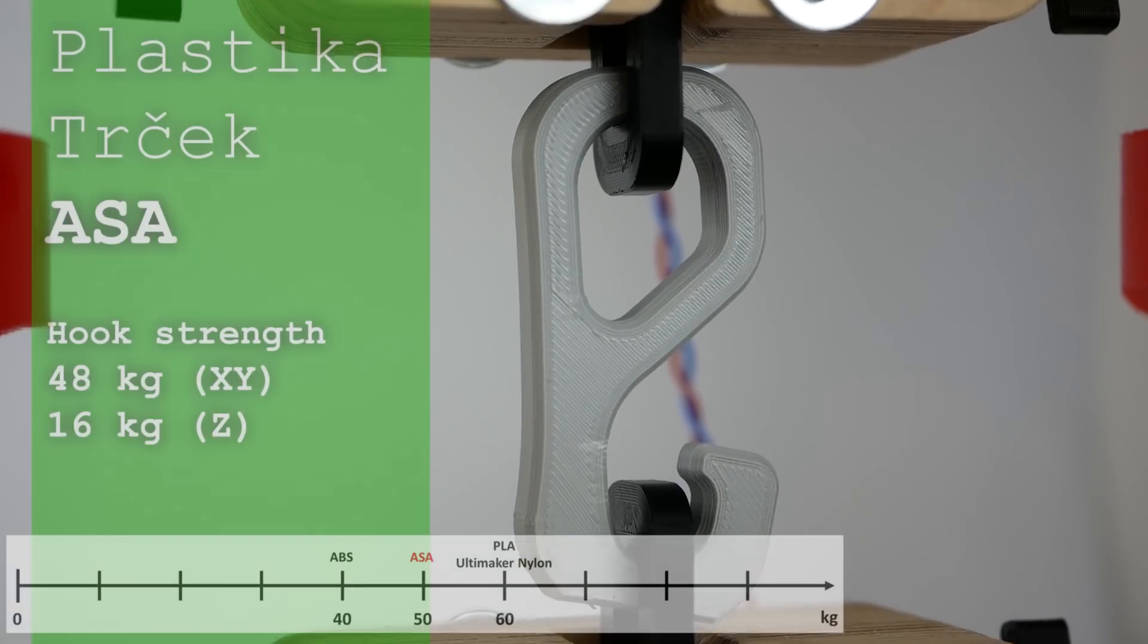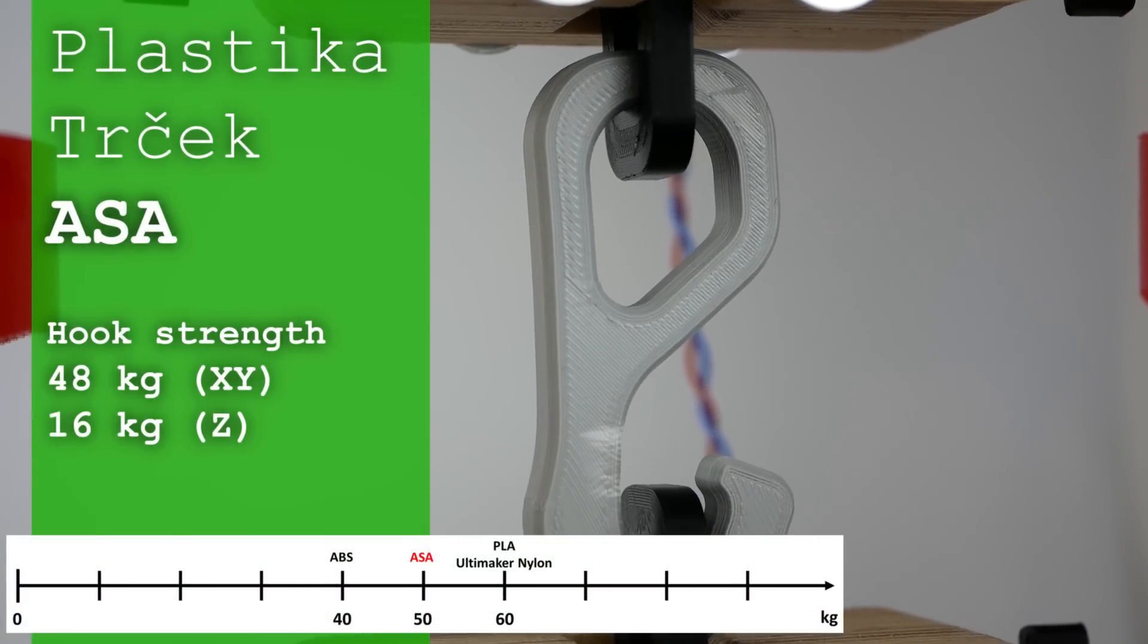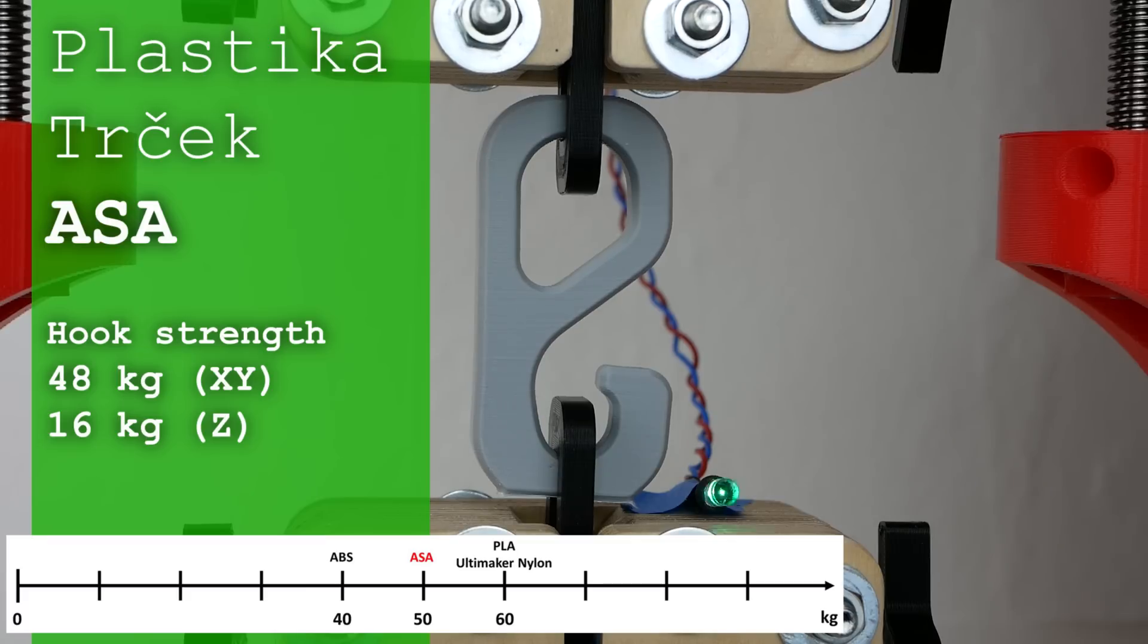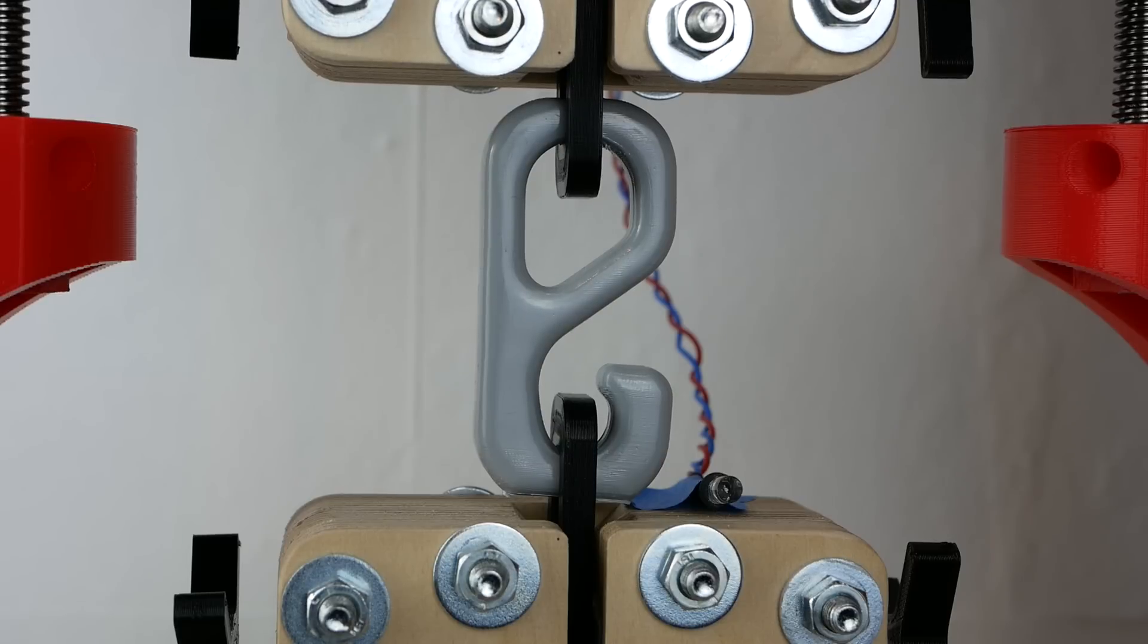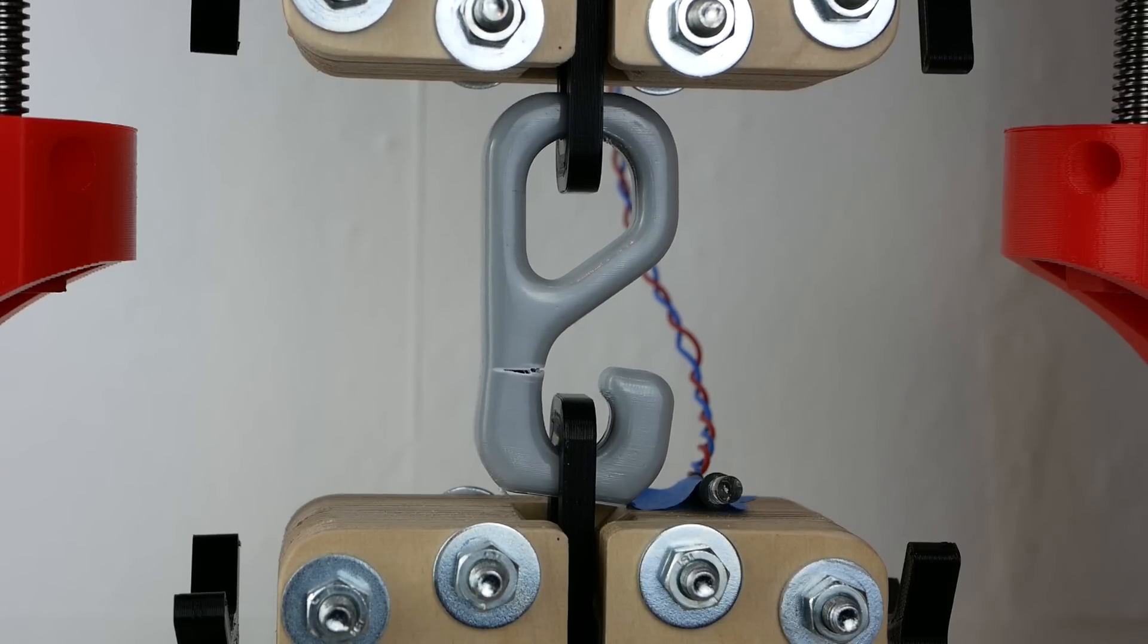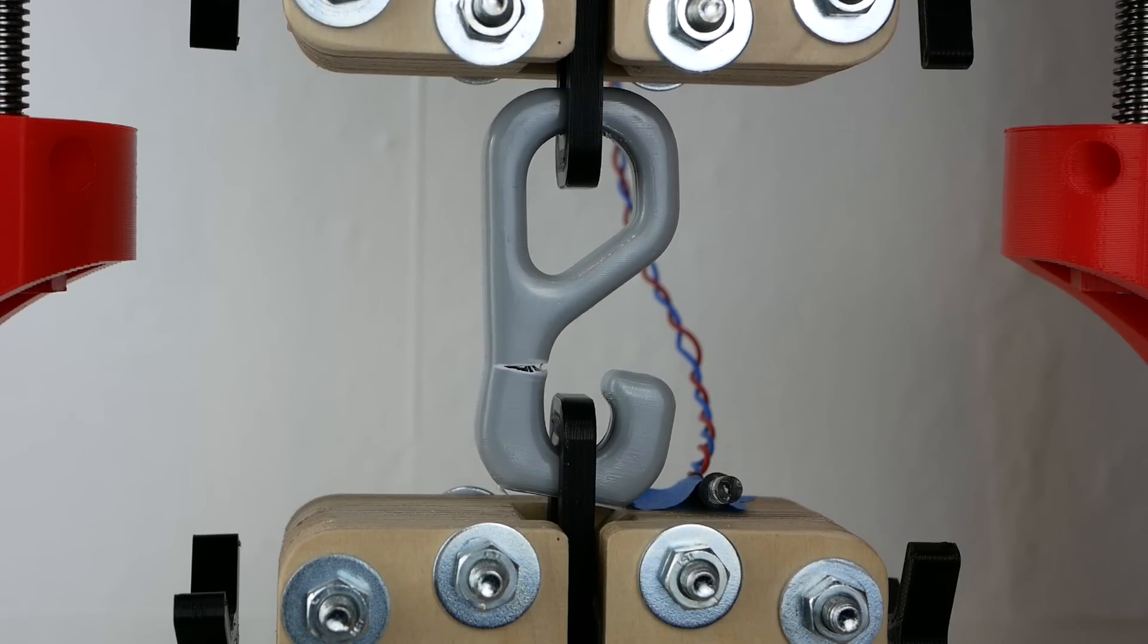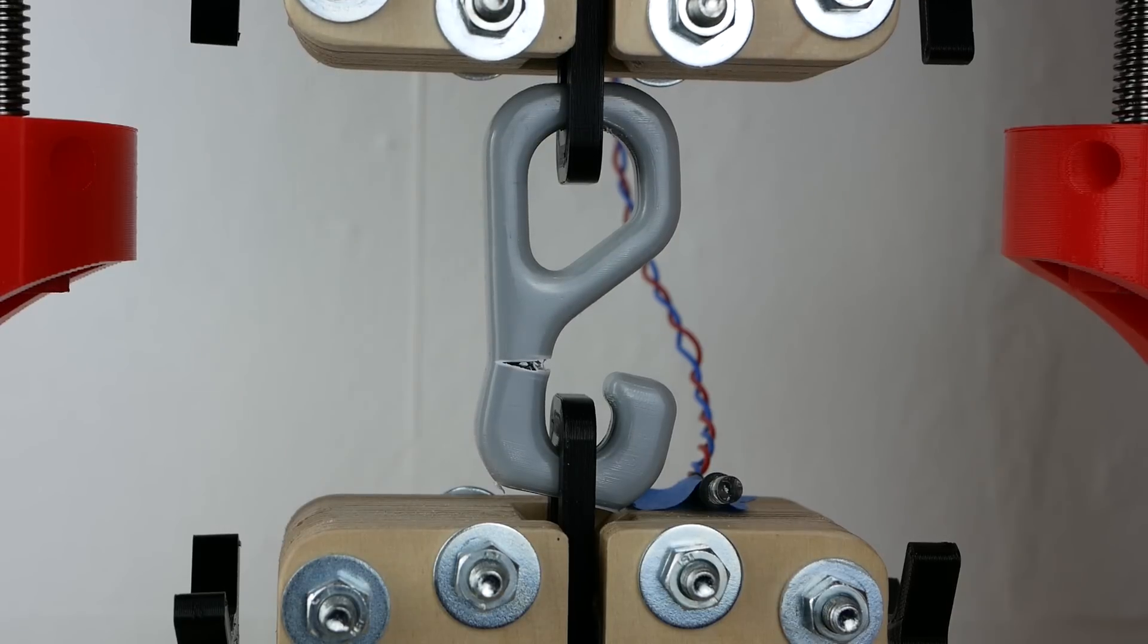The hooks I tested failed at 48 kg for the one printed on the bed and 16 kg for the upright one. The vapor smoothed hook was able to withstand a little more load, probably because the layer lines that act as notches were smoothed but still broke clean in between the layers.